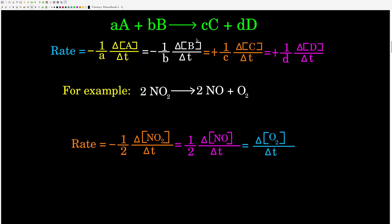That's the definition of the rate of reaction. For example, in this reaction — nitrogen dioxide decomposing into nitrogen monoxide and oxygen — we write the rate as negative one over two (the coefficient for nitrogen dioxide) times the change in the concentration of nitrogen dioxide over time. That equals one over two times the change in concentration of nitrogen monoxide over time, which is positive because we're making more nitrogen monoxide. Or we could write the rate as one over one times the change in concentration of oxygen over time, which is also positive because oxygen is being produced.